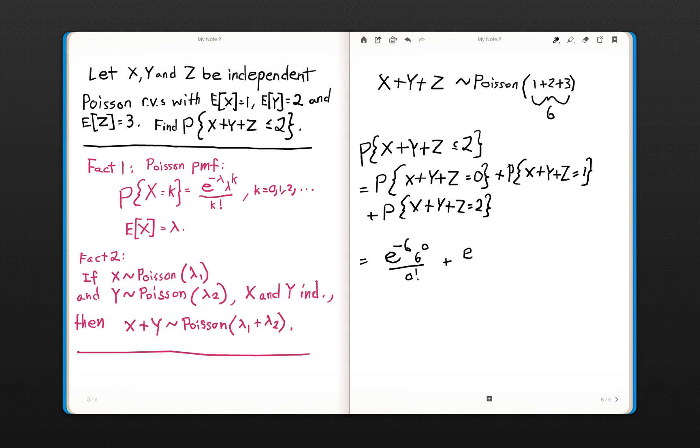plus e to the negative 6, 6 to the first power divided by 1 factorial, plus e to the negative 6, 6 squared divided by 2 factorial.